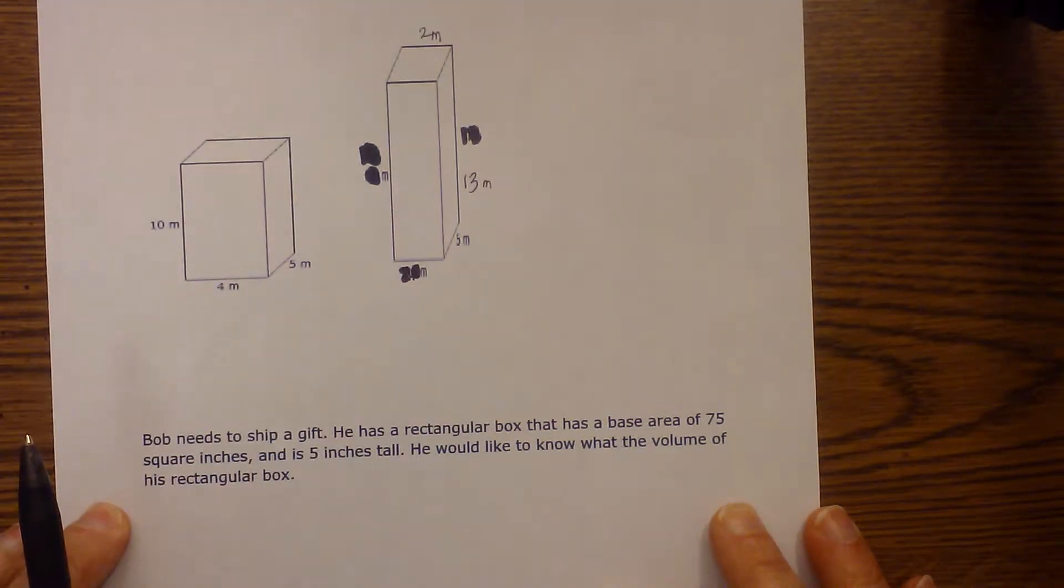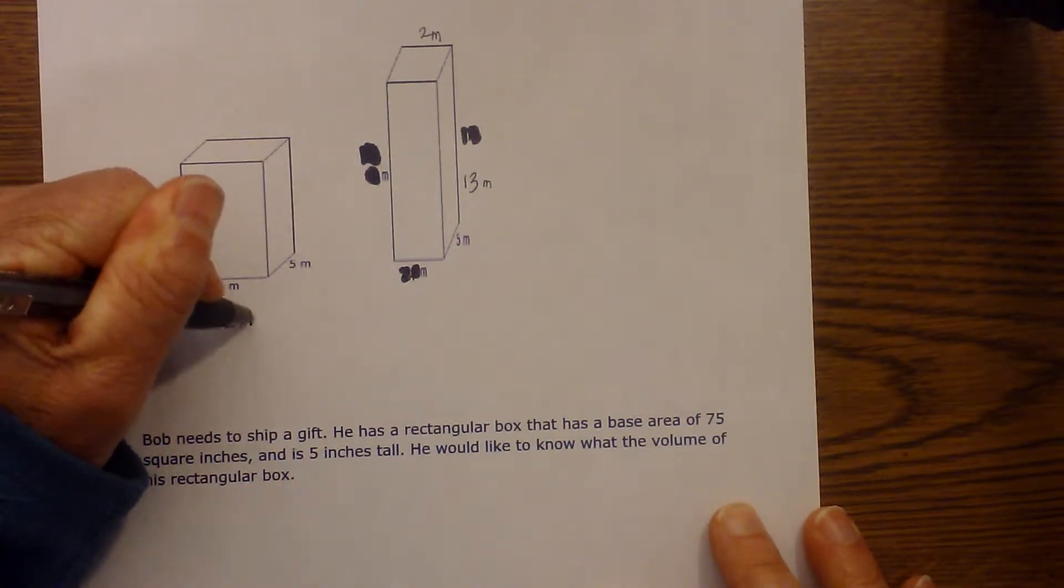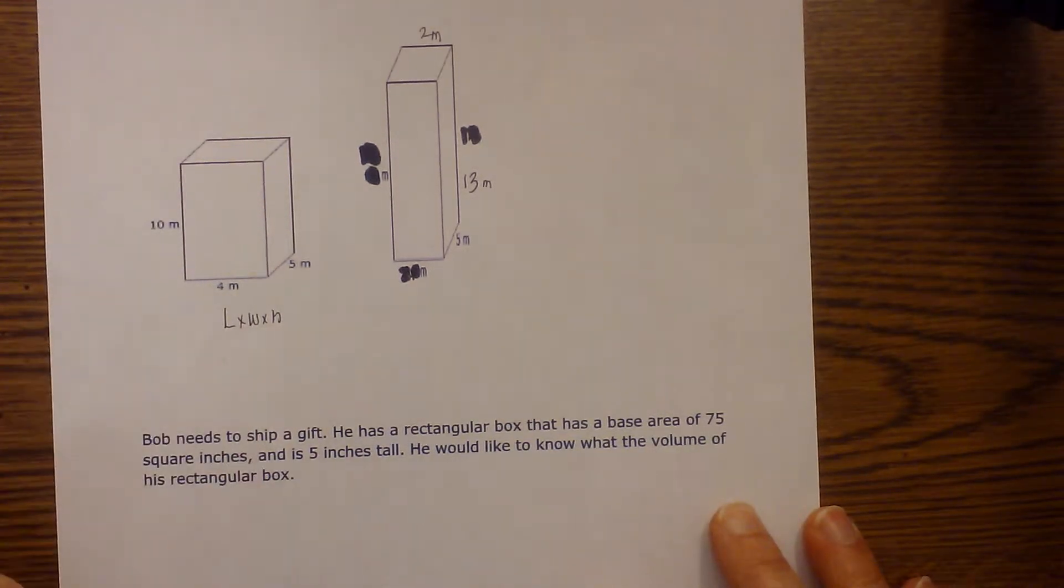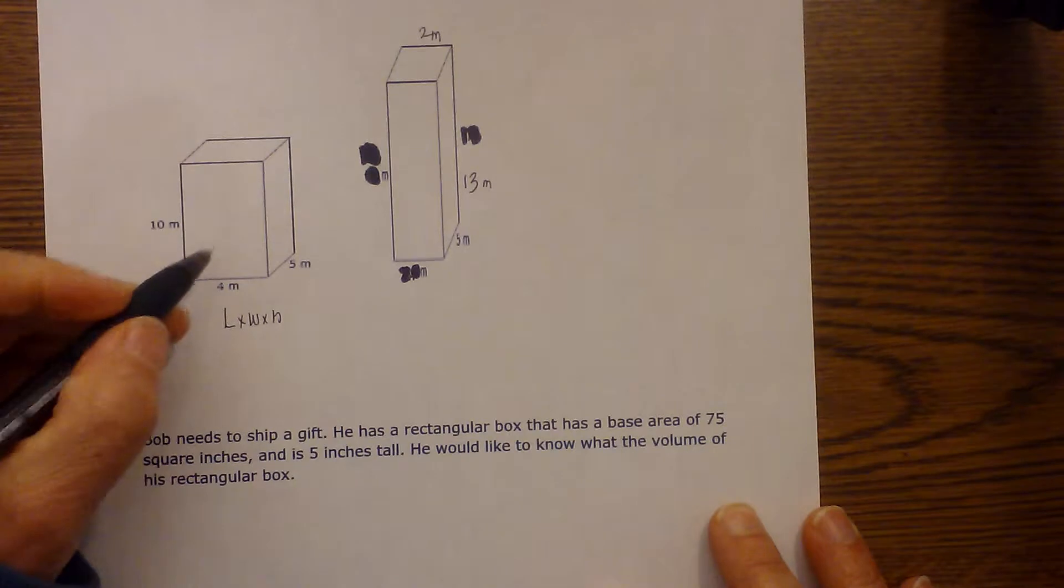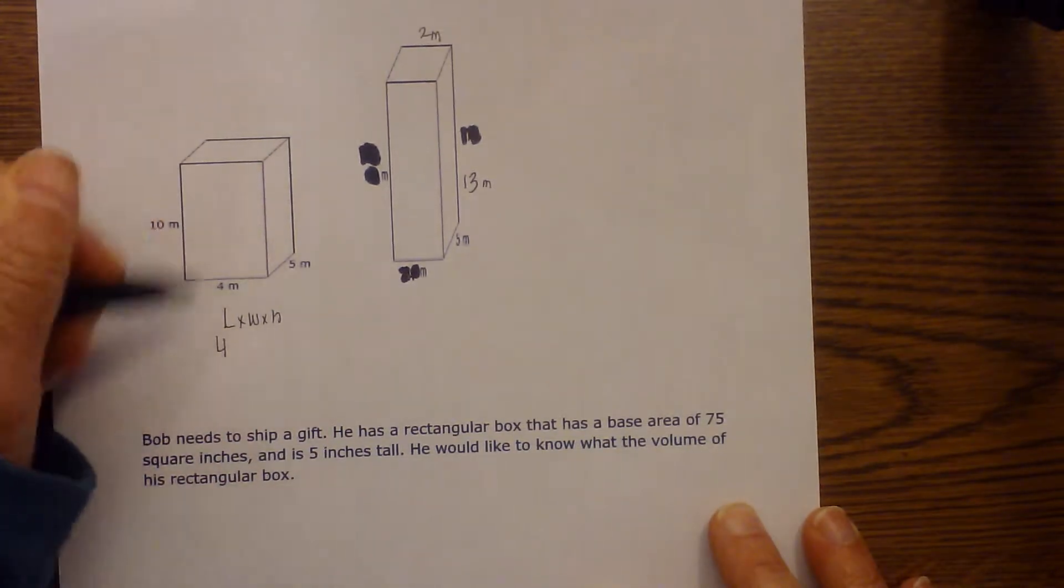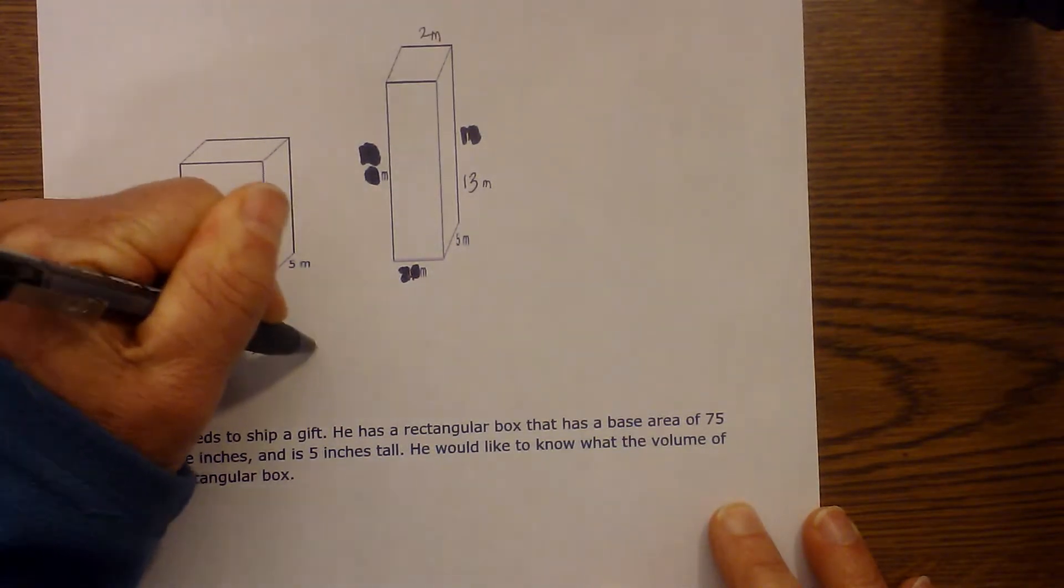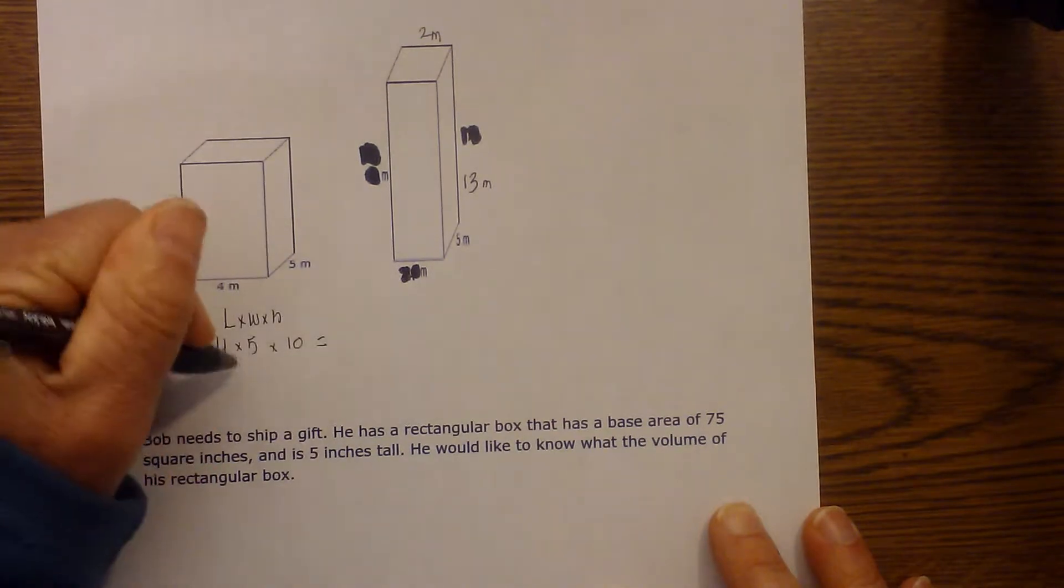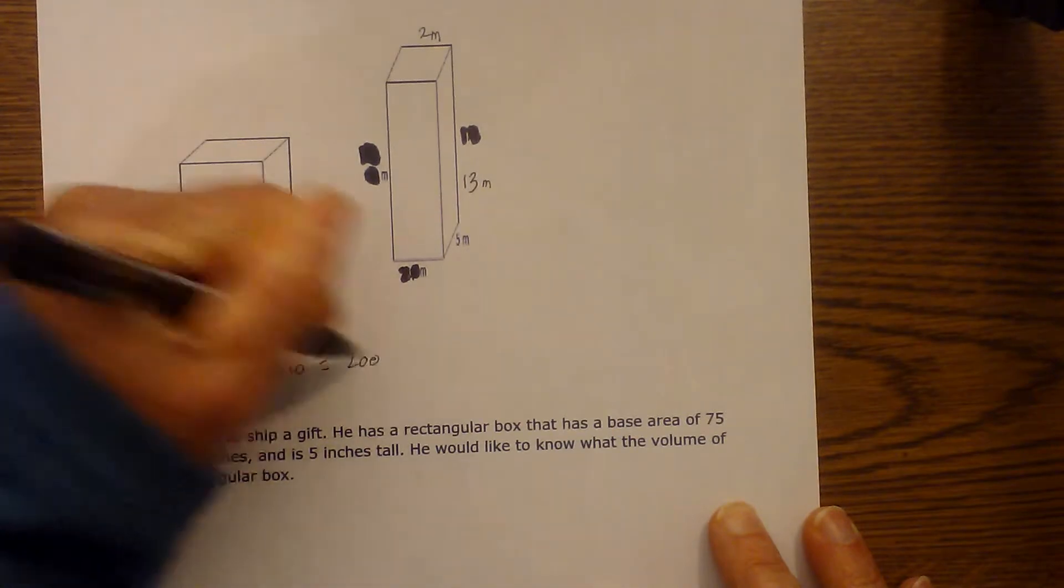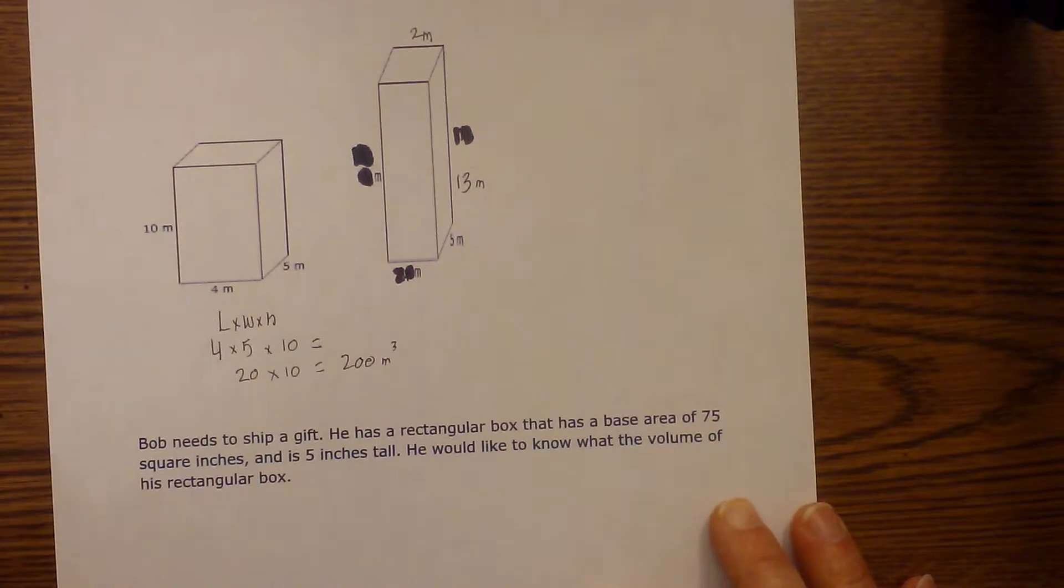So remember the formula is length times width times height, and we're going to use that one because the base area is not given. So now we just plug in the numbers. The length is 4, the width is 5, and the height is 10. And now 4 times 5 is 20, times 10 is equal to 200. And it is given in meters, meters cubed. So let's compare this now to the tall narrow one.